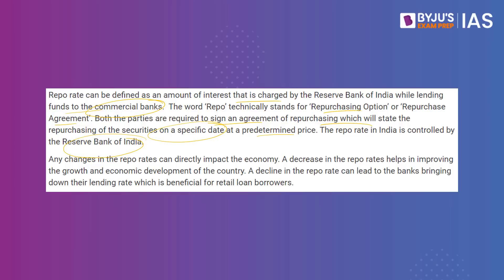By increasing the repo rate, it incentivizes savings — people are encouraged to save more — and disincentivizes expenditure, asking people not to spend too much, thus curtailing overall demand and GDP, which in turn reduces the inflation rate. A decrease in the repo rate helps improve growth and economic development; a decline can lead to banks bringing down their lending rates, which is beneficial for retail loan borrowers. Therefore, in times of weak economic activity the RBI cuts the repo rate, and when there is inflation it increases the repo rate.